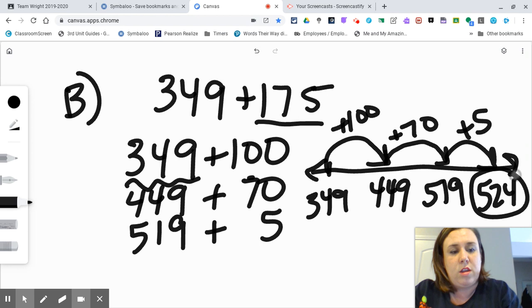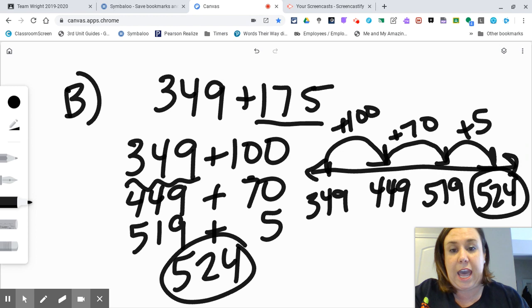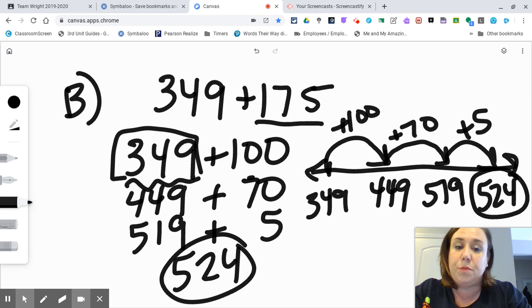There is strategy B, which is adding one number in parts. You keep this whole first number the same and you add the other one in parts. And you're adding, my parts could be different, you can add in smaller pieces, you don't just have to do the hundreds, tens, ones like that.